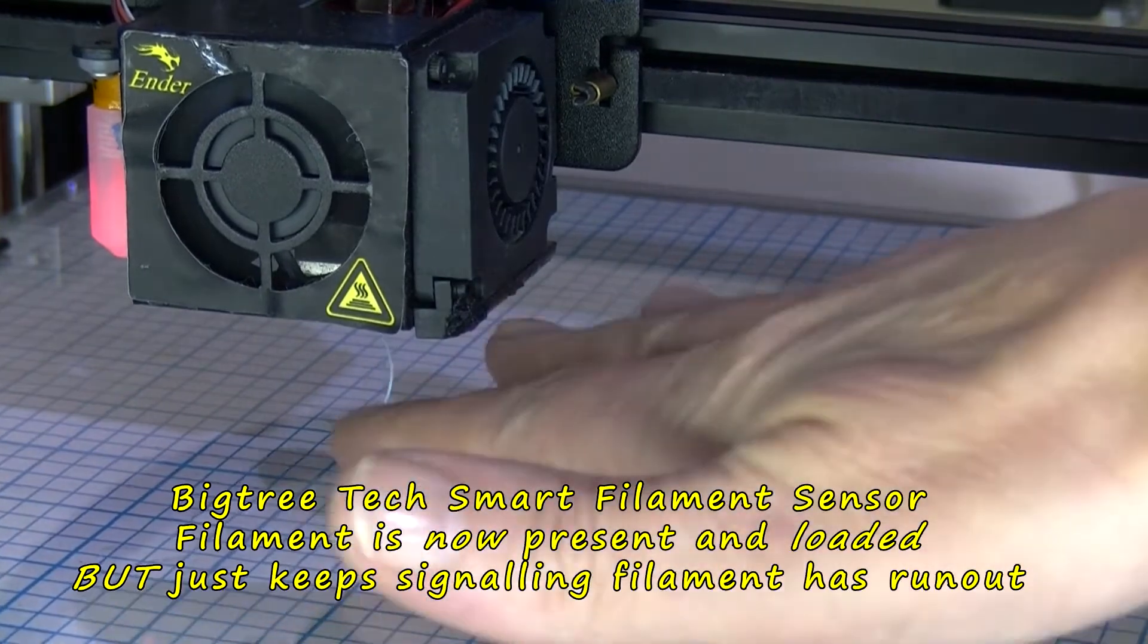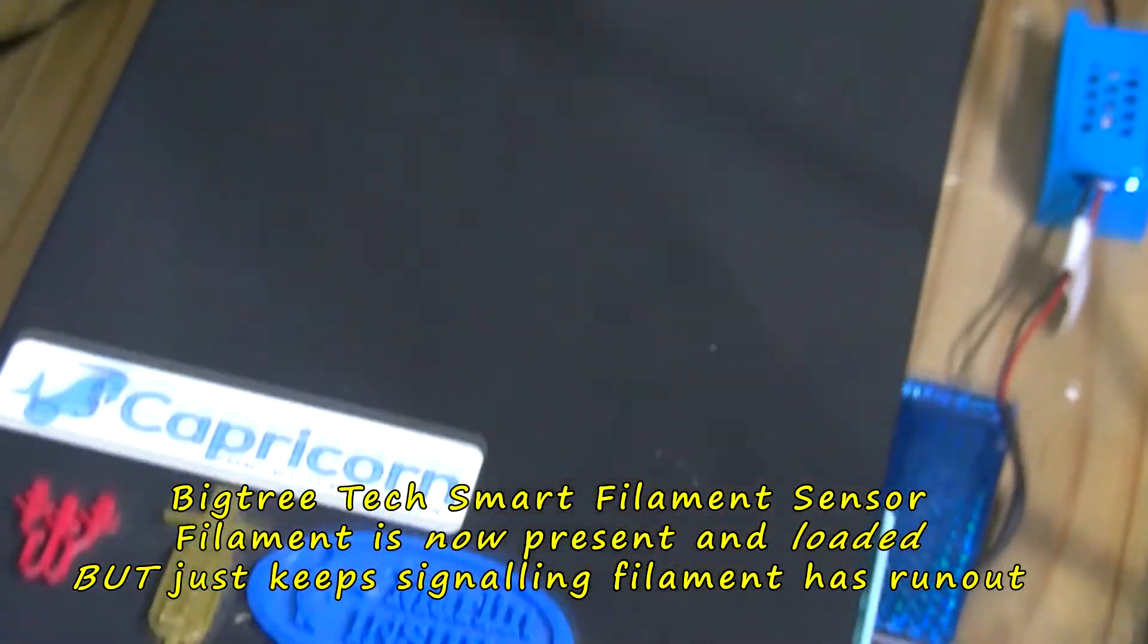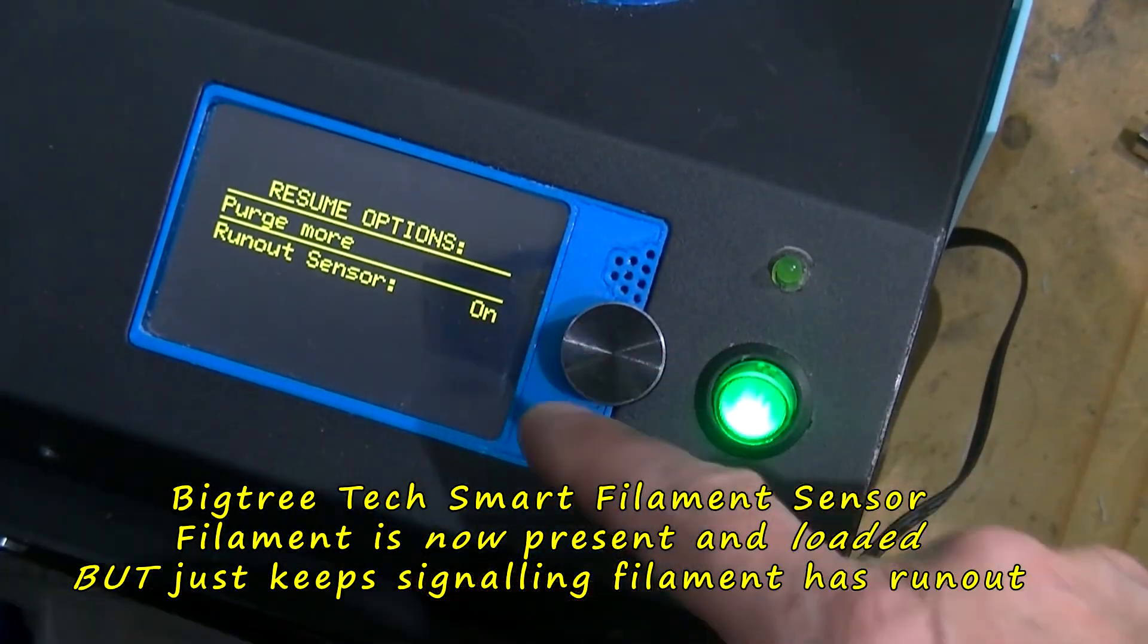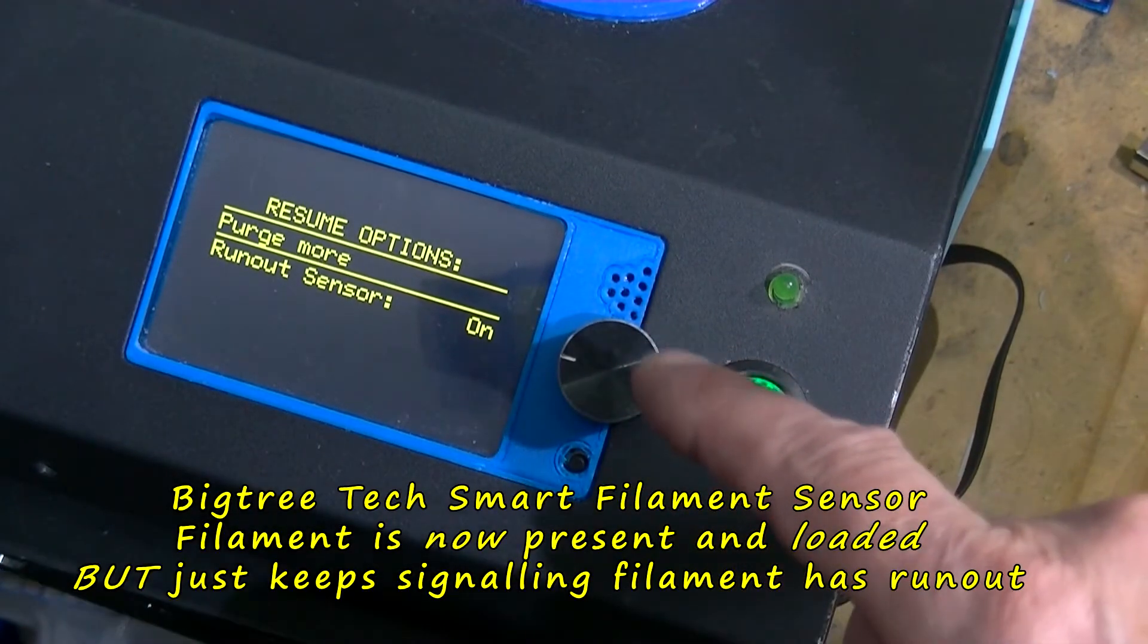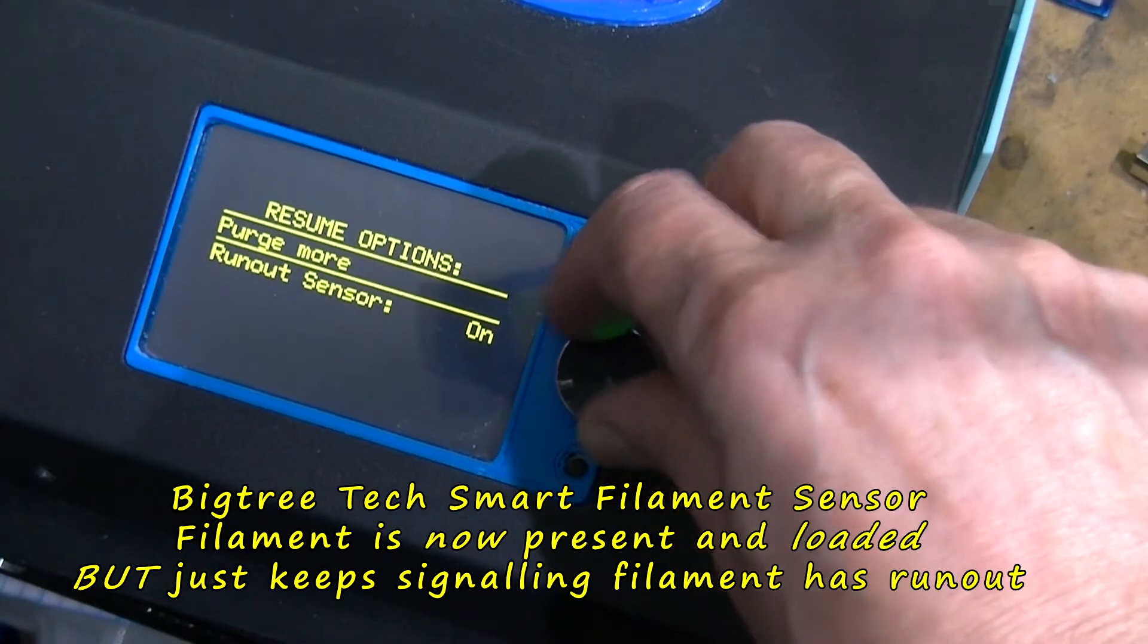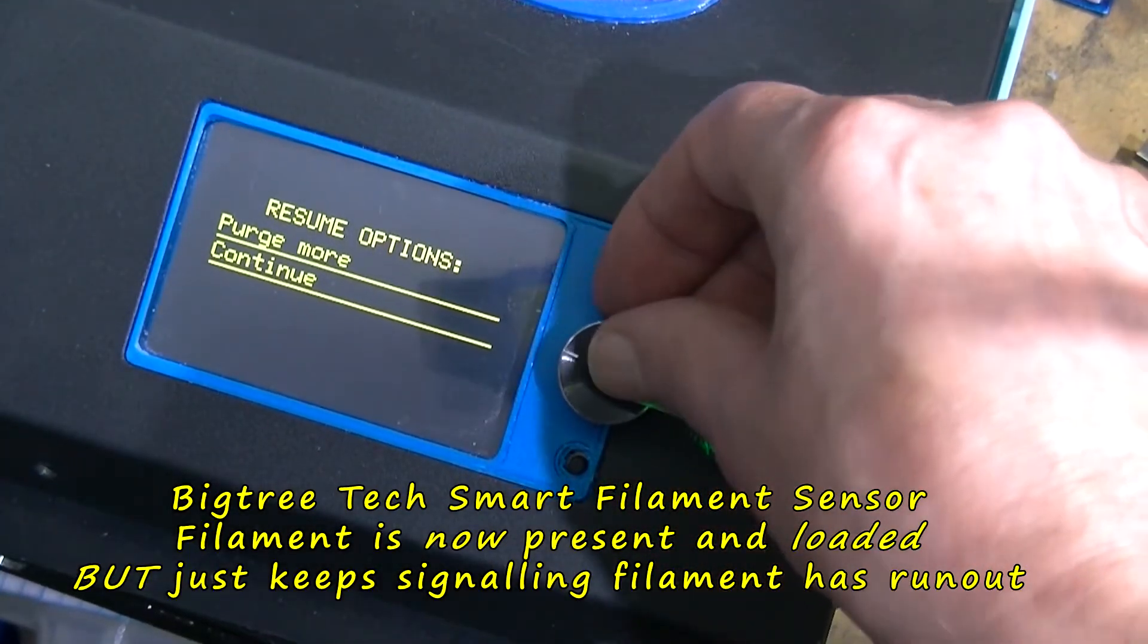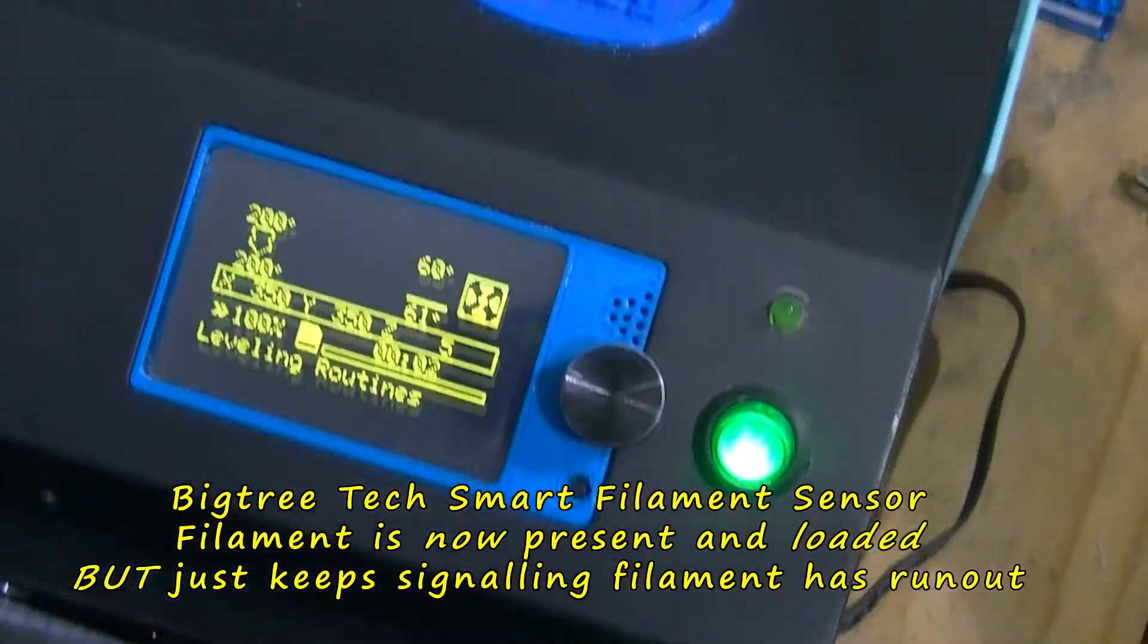I think it's 50mm with that. We've got on the display 'Purge more, run out sensor.' I don't want to purge more, so I'm going to have to turn the run out sensor off. Then it goes to 'Continue, press the button, leveling routines.'